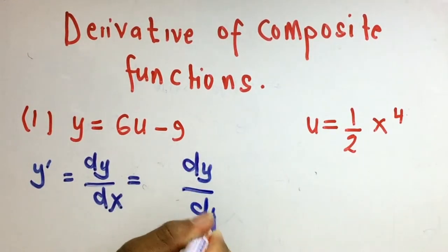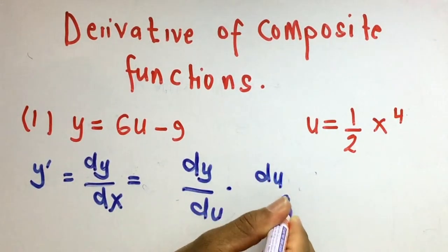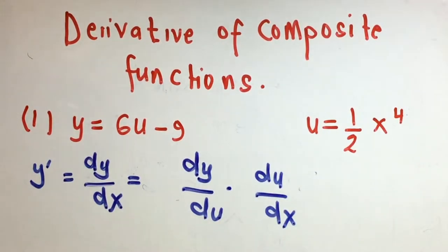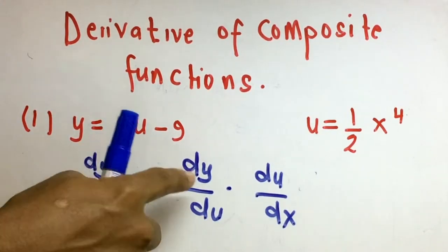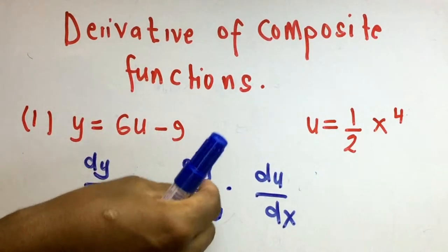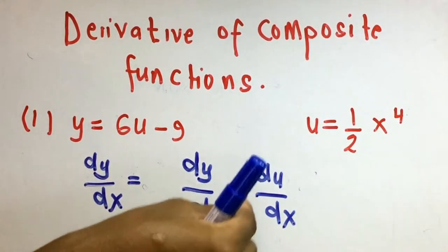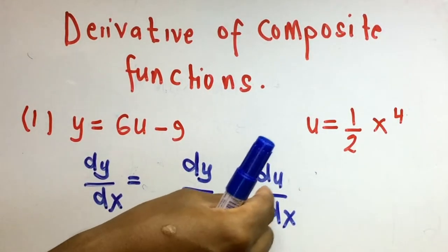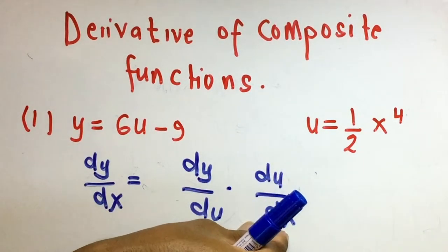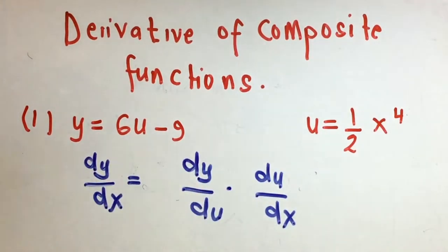dy/dx equals dy/du times du/dx. When we have a composite function, the derivative of function y with respect to x is the derivative of y with respect to u, multiplied by the derivative of u with respect to x. So we multiply these two.